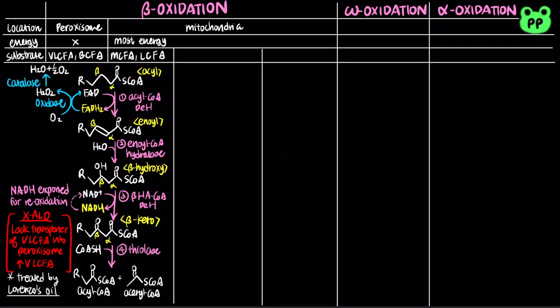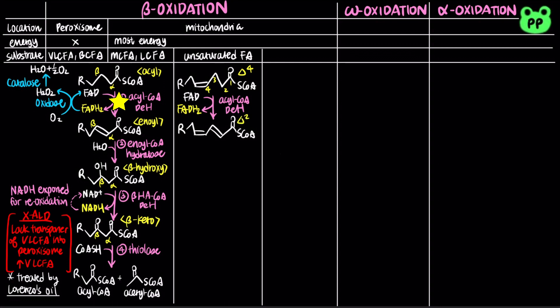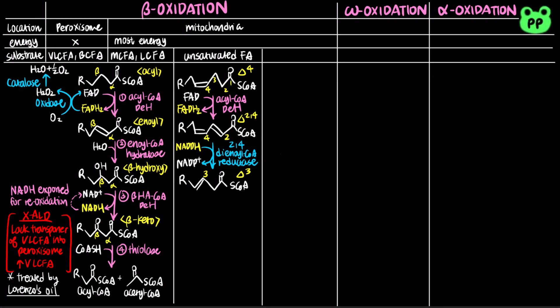Oxidation of unsaturated fatty acids requires two auxiliary or helper enzymes. When there is a cis-double bond at the fourth carbon, the cis-delta-4-enoyl-CoA is first oxidized by acyl-CoA dehydrogenase, which is the first step of beta-oxidation, to produce FADH2 and trans-delta-2, cis-delta-4-dienoyl-CoA. Then the auxiliary enzyme dienoyl-CoA reductase reduces 2,4-dienoyl-CoA to trans-delta-3-enoyl-CoA, which is coupled to the oxidation of NADPH to NADP+. A double bond at the third carbon is still not a substrate for beta-oxidation.